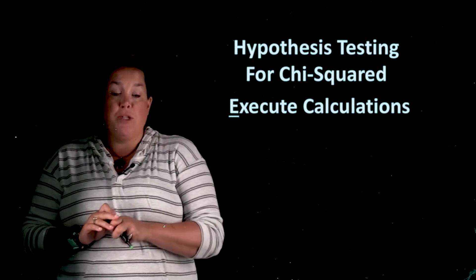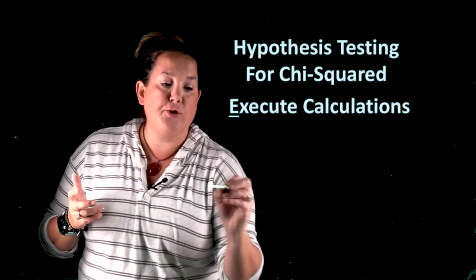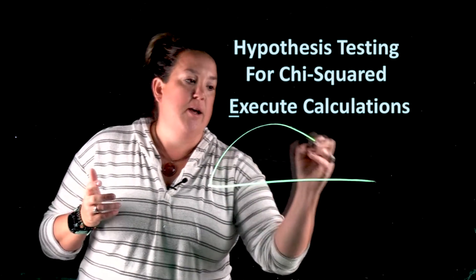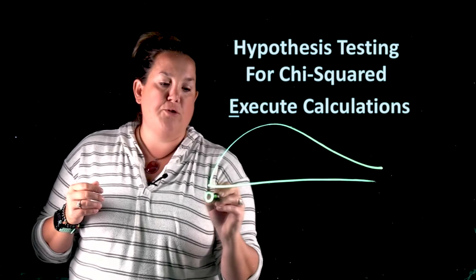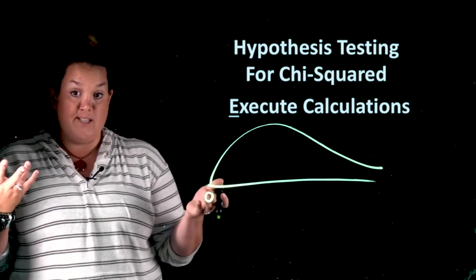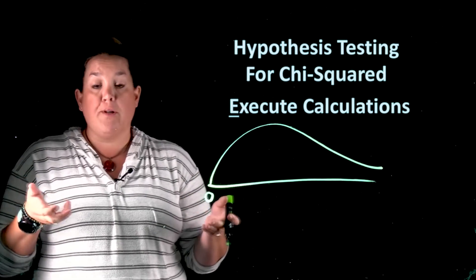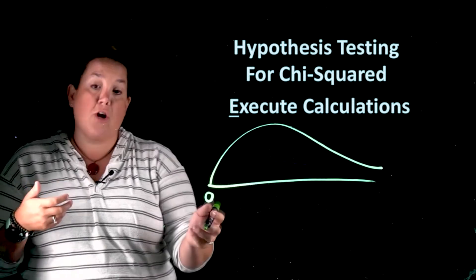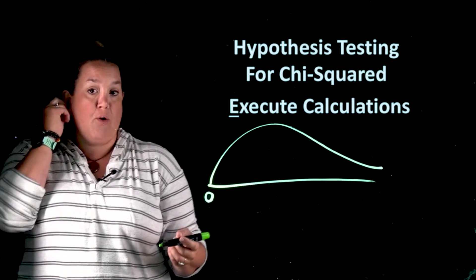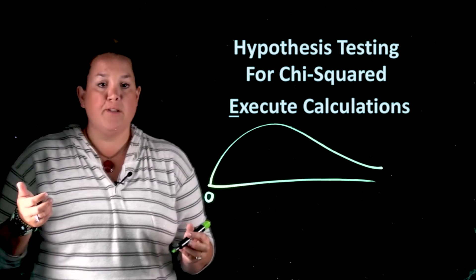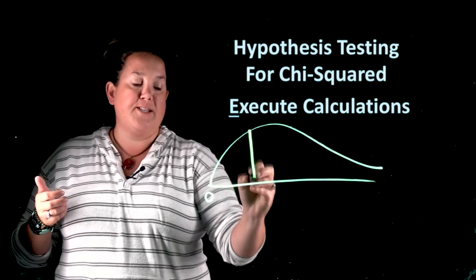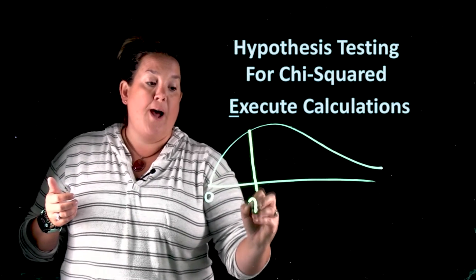In the last video when we talked about the chi-squared, I showed you the distribution and I said this is going to have a right skew to it because the chi-squared, because it's squared, has to always be positive. So it's going to start at zero instead of being centered at zero.